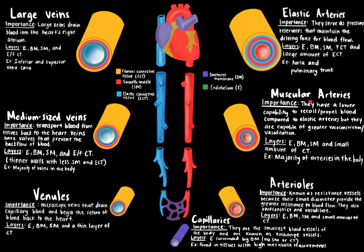Next are muscular arteries. They have a lower capability to recoil and propel blood compared to elastic arteries, but they are capable of greater vasoconstriction and vasodilation. They contain more smooth muscle and less connective tissue compared to elastic arteries, and they make up the majority of arteries in the body.